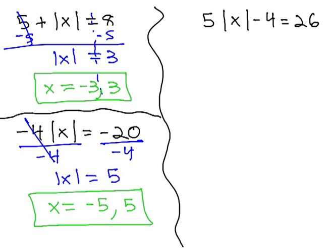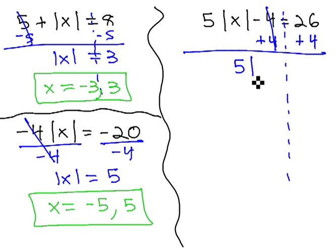As the example on the right suggests, we can even extend this pattern to equations that are two-step equations with absolute value. Again, before we do anything special with the absolute value, we must get it alone. To get the absolute value alone, first we deal with the addition and subtraction. We will add 4 to both sides of the equation. This gives us 5 times the absolute value of x equals 30. Finally, to get the absolute value alone, we have 5 times the absolute value, so we will divide both sides by 5. This gives us the absolute value of x is equal to 6.